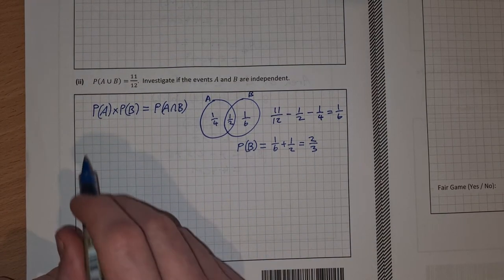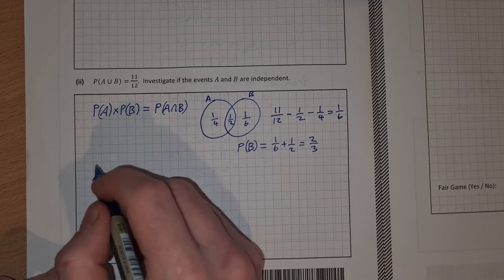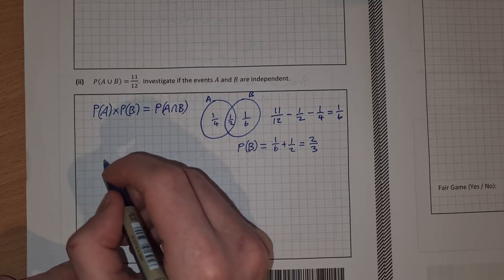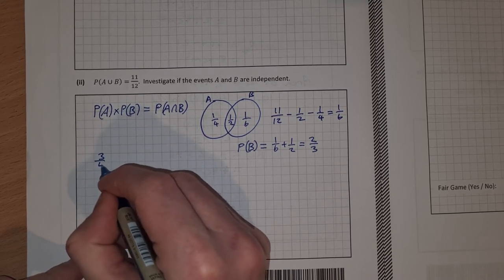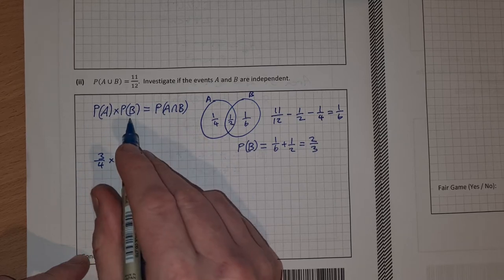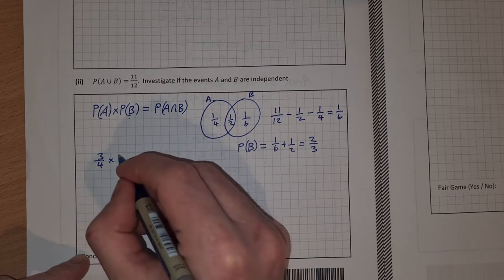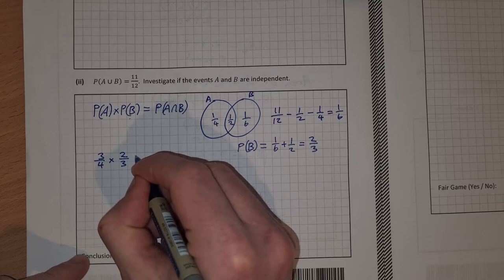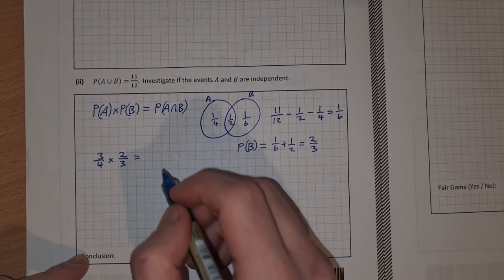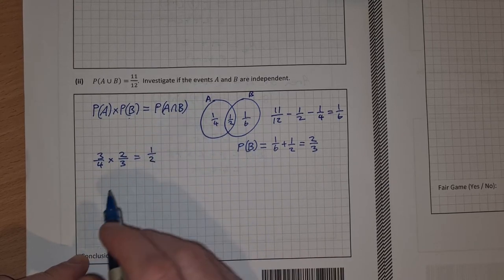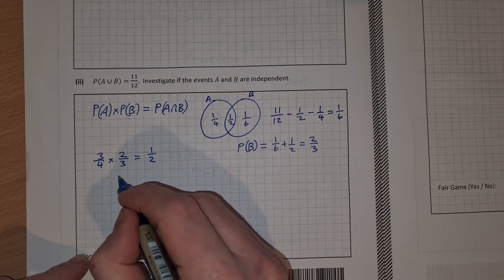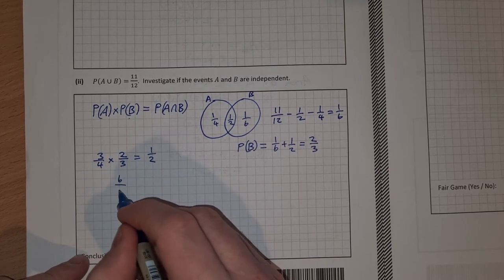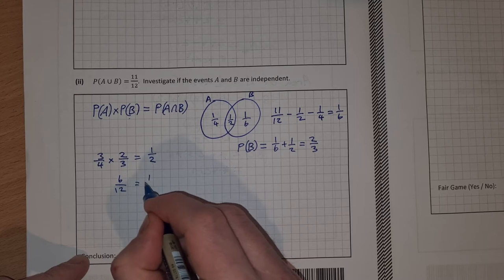Now I can fill in everything into my formula here. So the probability of A was 3 over 4 multiplied by the probability of B which we just found as 2 over 3 equal to the probability of A intersection B which is a half. So 3 by 2 is 6, 4 by 3 is 12, 1 over 2.